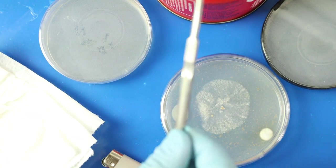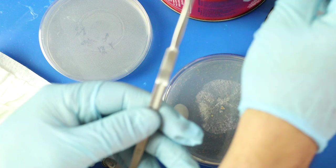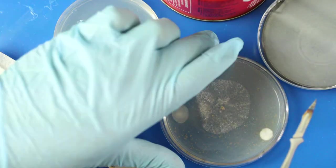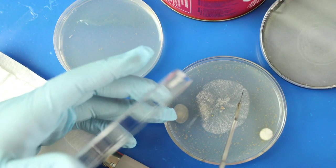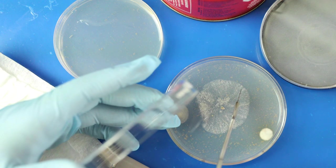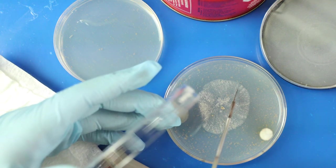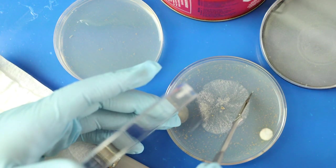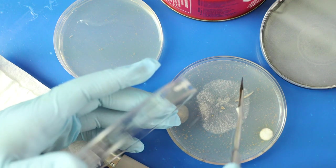We're going to cut out a triangular shape out of the original agar with the contamination and slowly and methodically transfer it over to other agar petri dishes.